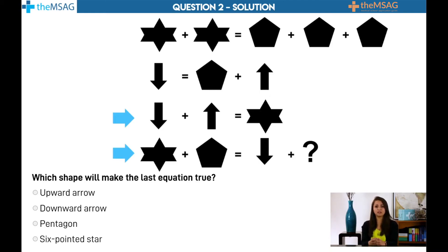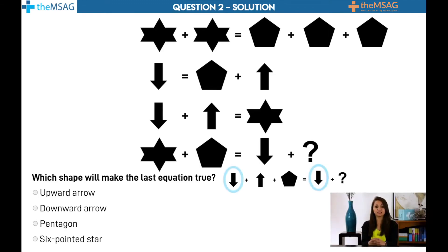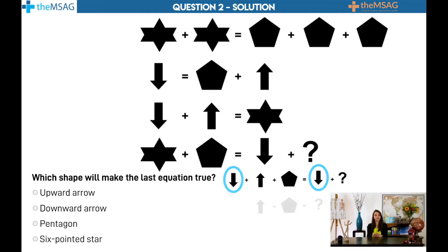Substituting this into the final equation gives us downward arrow plus upward arrow plus pentagon equals downward arrow plus question mark. We can now simplify by subtracting a downward arrow from both sides of our new equation, which becomes upward arrow plus pentagon equals question mark.